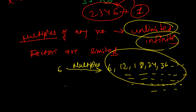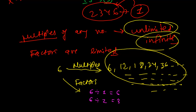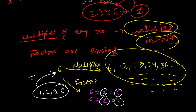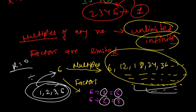But if you talk about factors, they are always limited. Only a few numbers can divide 6 exactly: just 1, 2, 3, and 6 — only these 4 numbers can divide 6 with remainder 0. So we have only 4 factors. But if you talk about multiples, we have an infinite number of multiples.